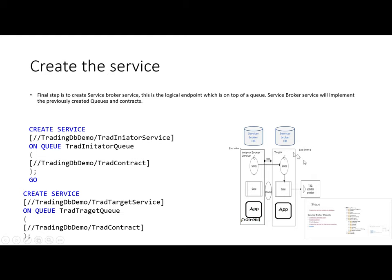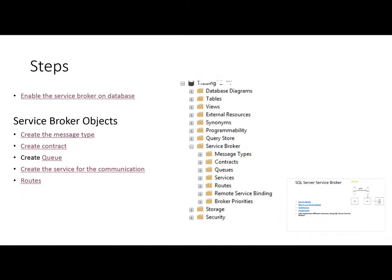On the target I am using the service with the name 'Trading Target Service', implementing the target queue which I created in the previous steps. In this service I also have to specify the contract name, because the contract defines the direction — which service can start the messaging.